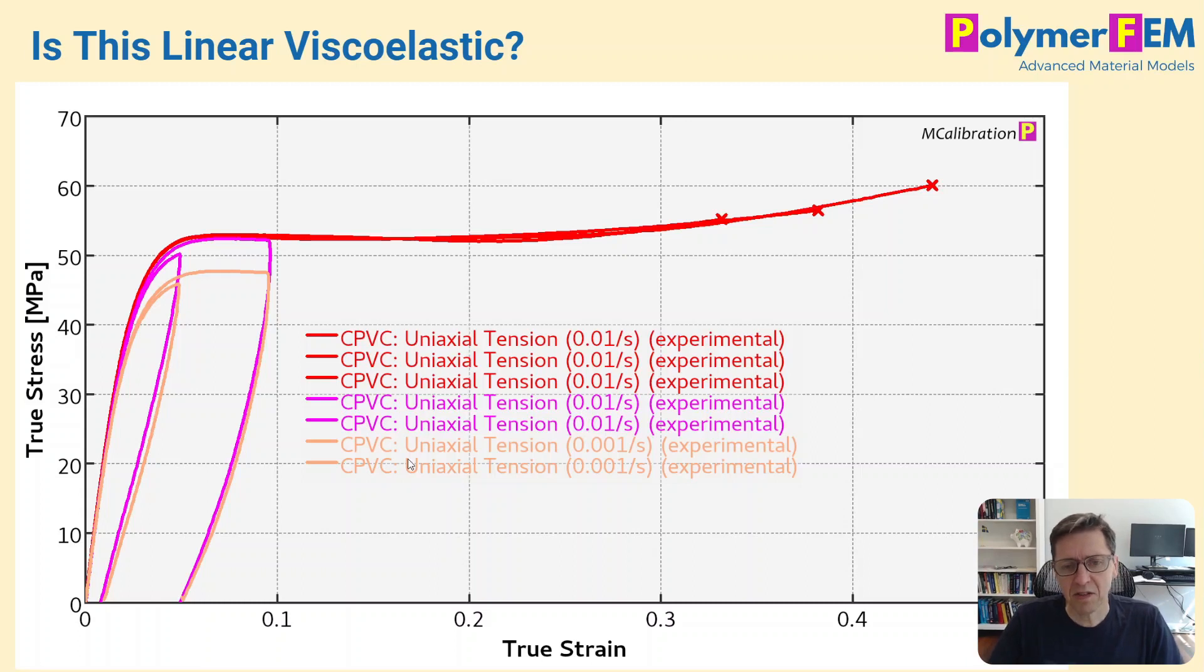Well, it's not always easy to tell, but in this case we can see that it's actually undergoing plasticity when it's being deformed. So a material that undergoes permanent deformation or plasticity is not linear viscoelastic. So the answer here is no for this example.